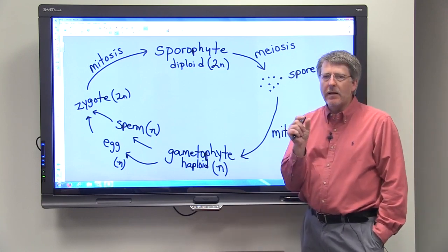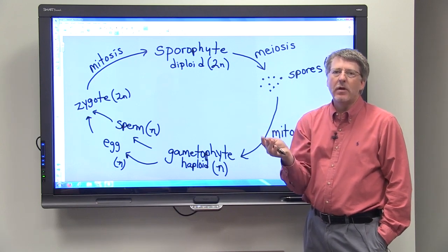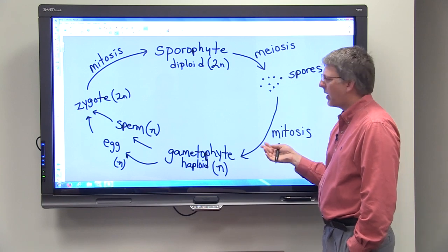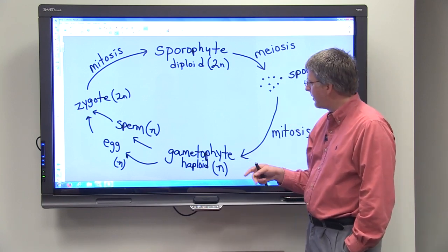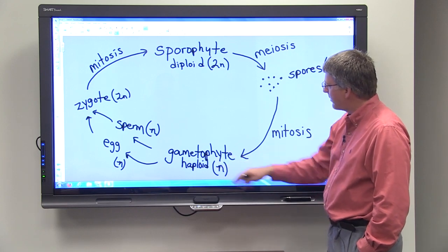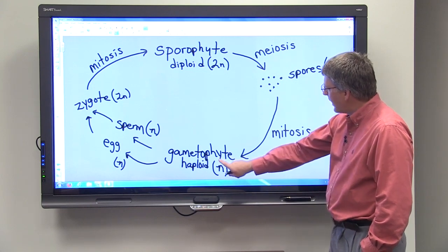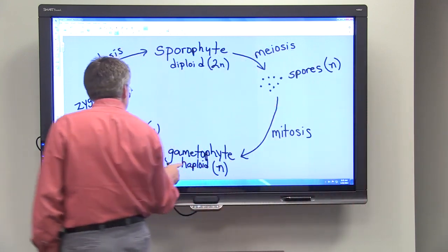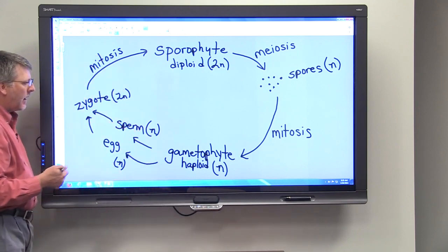Now, in some plants, this gametophyte is going to be microscopic and you would never notice it most probably. In other plants such as mosses, the gametophyte generation may be dominant. But for most plants, the gametophyte generation is something that you're not going to be aware of. Now, this haploid gametophyte, as the name suggests, produces gametes, sperm and egg.